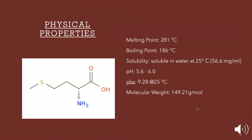The physical properties of methionine: we have a melting point at 281 degrees Celsius, boiling point at 186 degrees Celsius, solubility in water at 25 degrees Celsius of 56.6 milligrams per milliliter, having a pH of 5.6 to 6.0 which is a little acidic just below 7, pKa at 9.28 at 25 degrees Celsius, and our molecular weight coming in at 149.21 grams per mole.